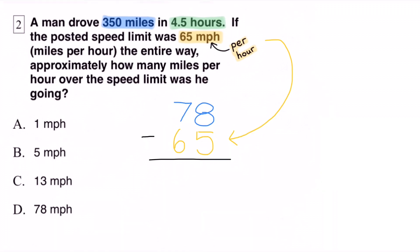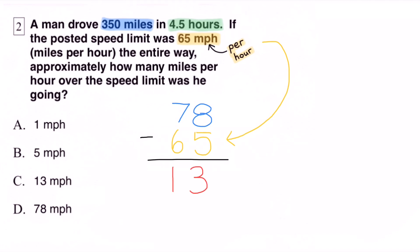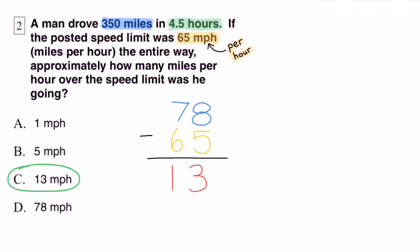Approximately 78 miles per hour minus 65 miles per hour is 13. So he was traveling approximately 13 miles per hour over the speed limit. The correct answer would be C, 13 miles per hour over the posted speed limit.